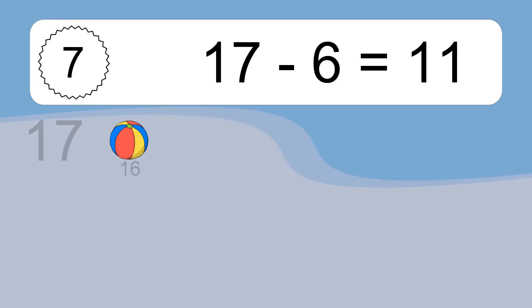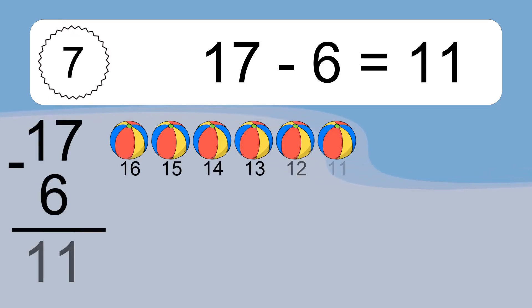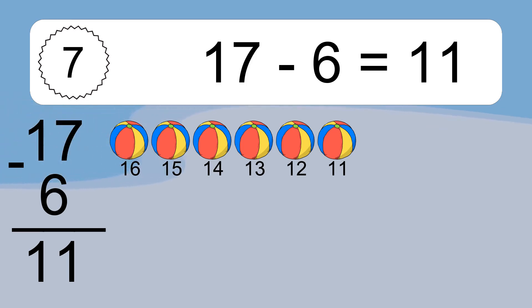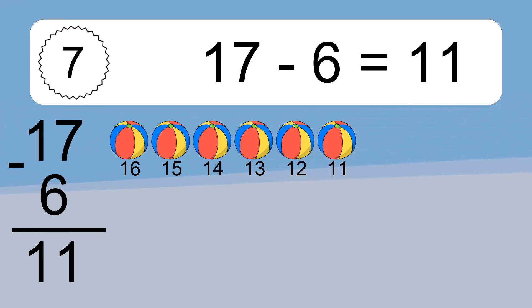17 minus 6 equals what? 17 minus 6 equals 11. Let's count it: 16, 15, 14, 13, 12, 11.